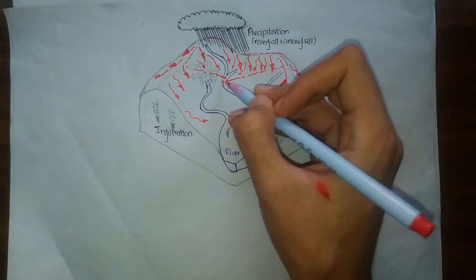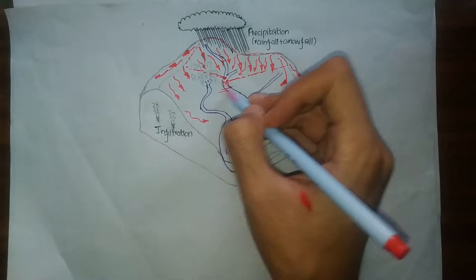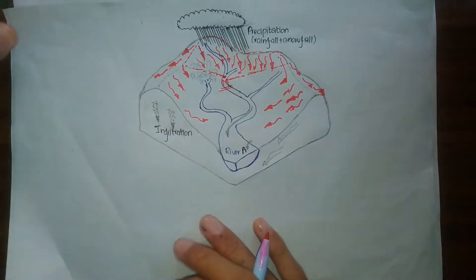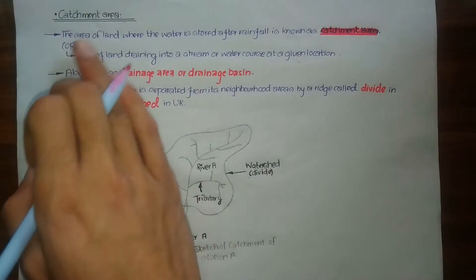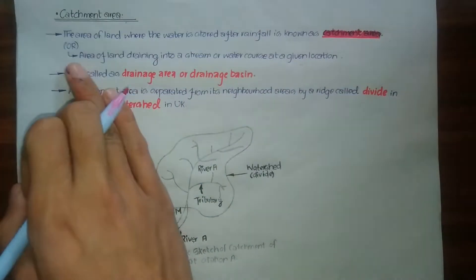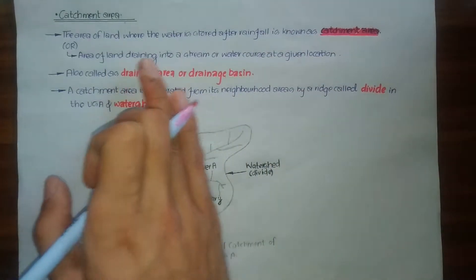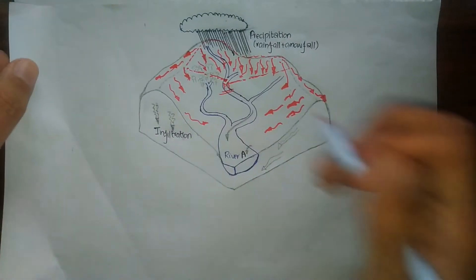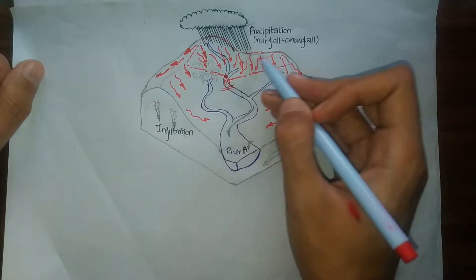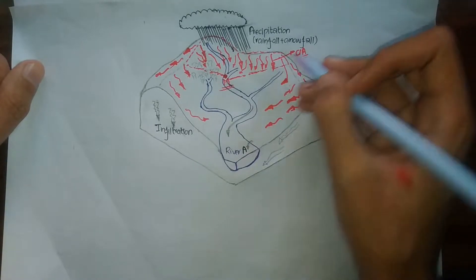For this station M, all the rain water from this red area is going to get deposited here. So for station M, this particular red region is the catchment area. The definition of catchment area is: the area of land where the water is stored after rainfall, or simply, the area of land draining into a stream or water course at a given location.